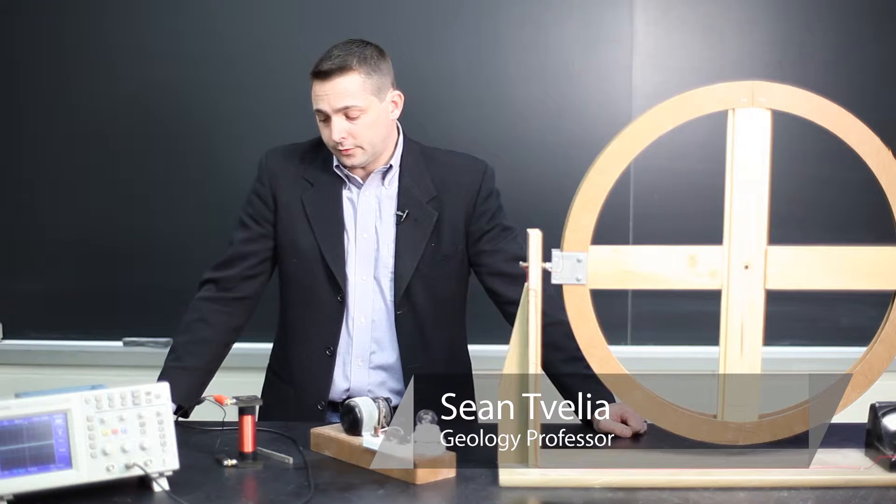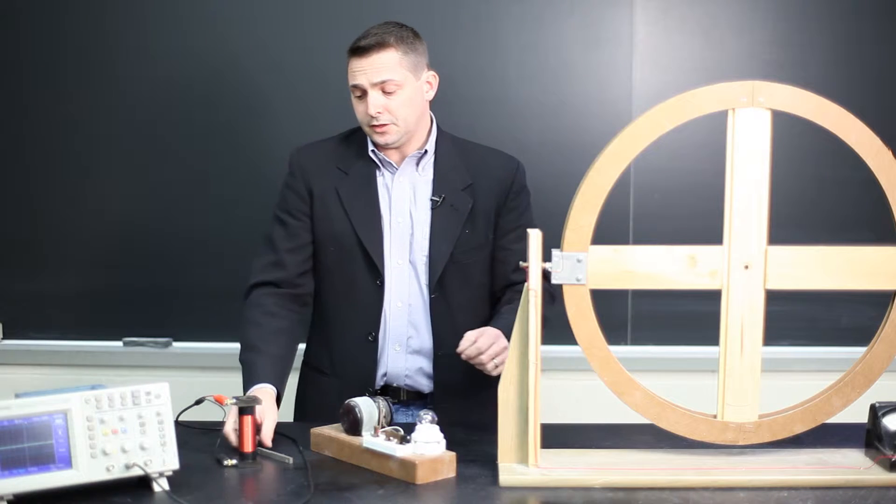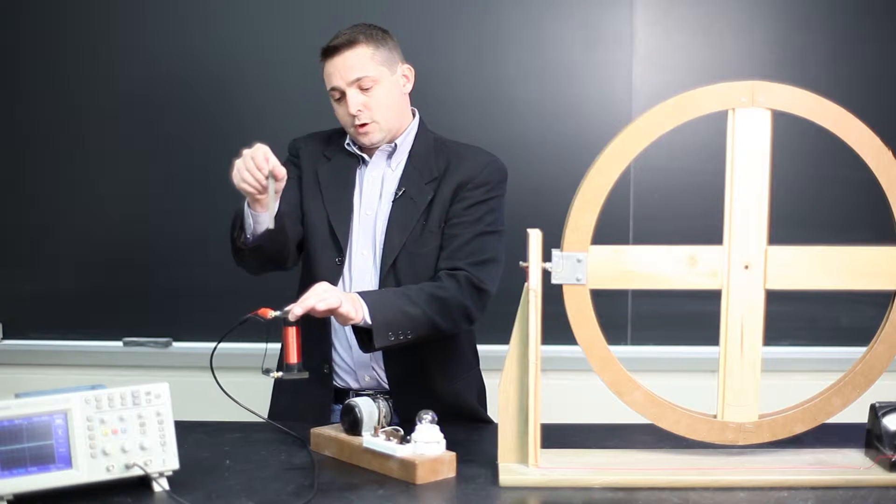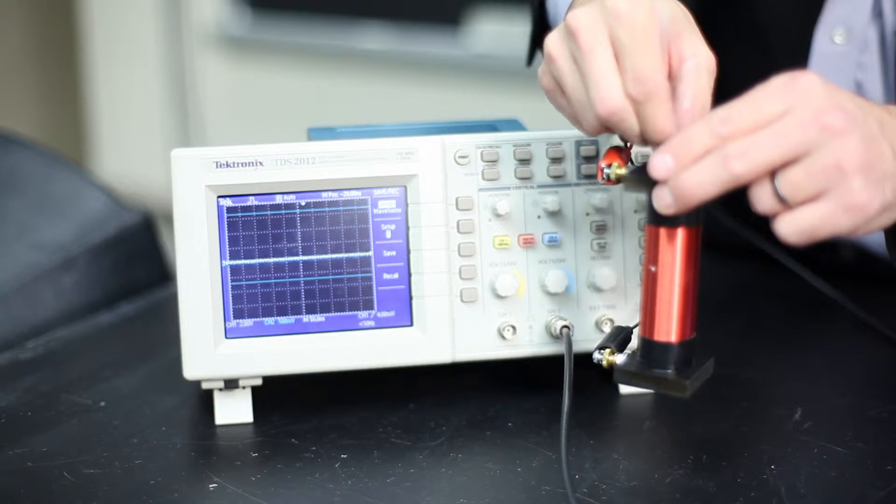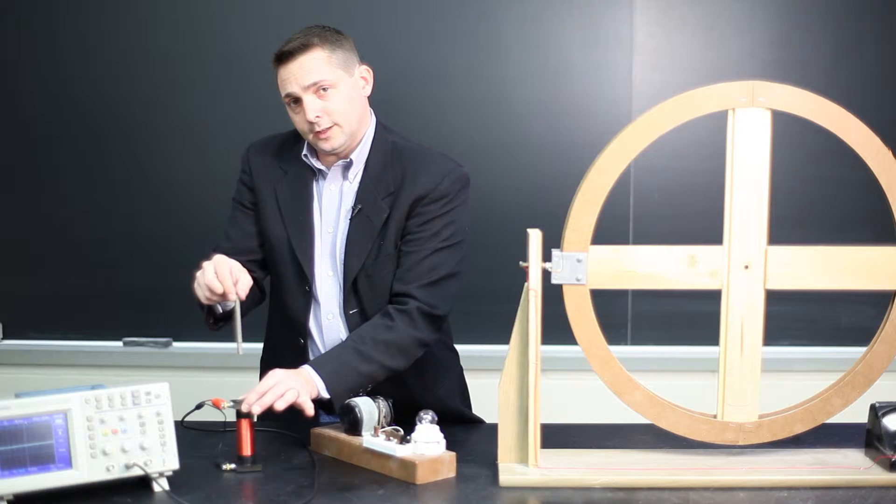Electrical generators work based on a process known as electrical induction, which is basically credited to Michael Faraday, who discovered by passing a magnetic bar through coils of copper you can create an electrical charge. So to create an electrical generator,